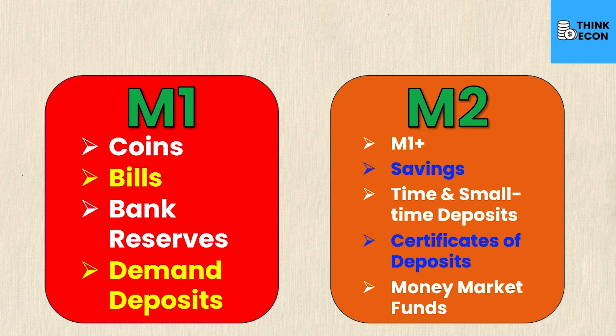Money supply figures are given every single month by the central bank of your country, and when they report these numbers they typically only report M1 and M2. If you ever hear about money supply on the news, you're probably hearing about M1.